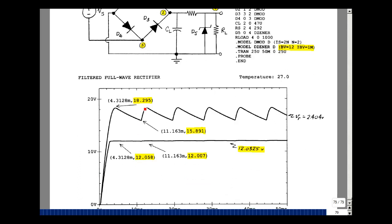The maximum here is 18.295. What we had back on page 47 was 18.305. The minimum here is 15.891. We had 15.889. The difference of those two here is 2.404, and on page 47 it was 2.416. So pretty much the same ripple.